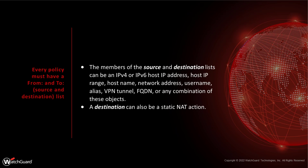Every policy requires you to define where traffic is coming from and where it's going. Those can be distinct IP addresses, host ranges, aliases, specific users or groups, VPN tunnels, qualified domain names, or any combination. With WatchGuard, you don't need a separate policy for a single IP versus an IP subnet — you can combine multiple sources and destinations into one policy. You can also have static NAT or SNAT actions as a policy destination.